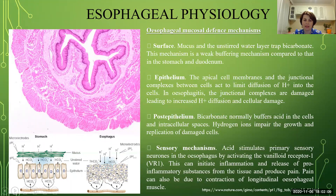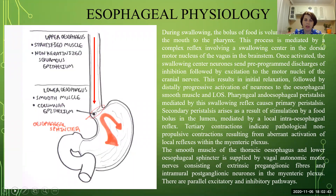The third mechanism is post-epithelial: bicarbonate normally buffers acid in cells and intracellular spaces, while hydrogen ions impair the growth and replication of damaged cells. The fourth mechanism is sensory: acid stimulates primary sensory neurons of the esophagus by activating the vanilloid receptor 1 (VR1), which can initiate inflammation and release of neurotransmitters from tissues, producing pain. Pain can also be due to contraction of longitudinal esophageal muscles. In a healthy individual, food is voluntarily moved from the mouth to the pharynx, initiated by a complex reflex involving the swallowing center in the dorsal motor nucleus of the vagus in the brainstem.